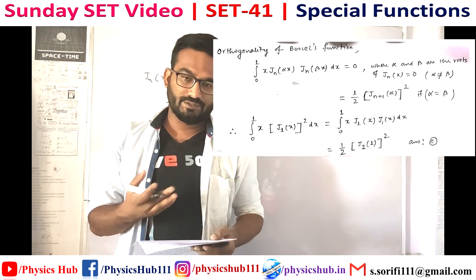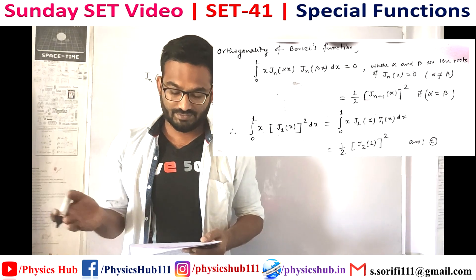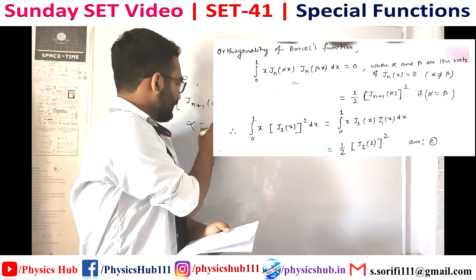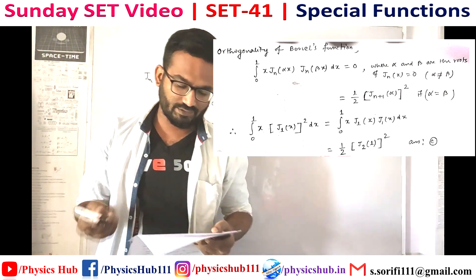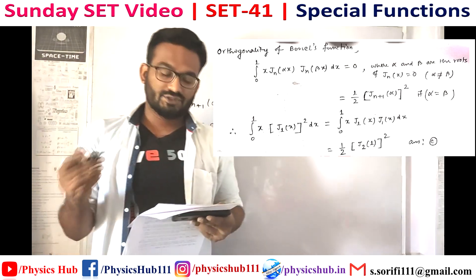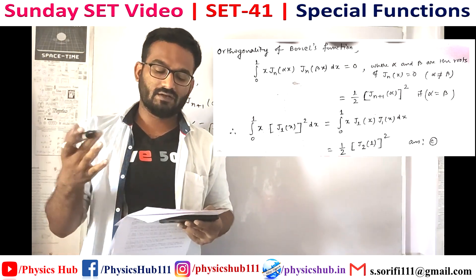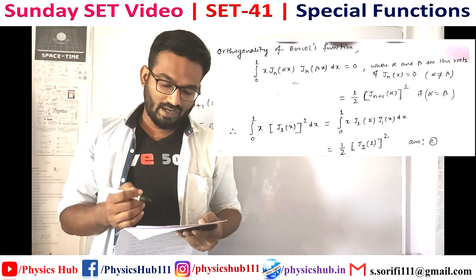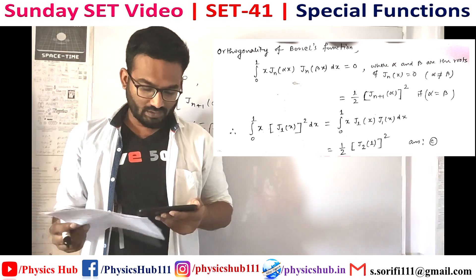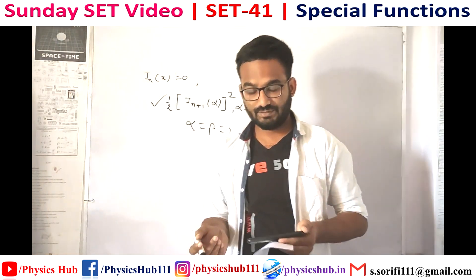This makes it very simple. We have the integral from 0 to 1 of x Jn(x)·Jn(x) dx, where α = β = 1. So according to the formula with α = β = 1, it produces ½ [J₂(1)]², since n + 1 = 2. So option C is the correct answer. Moving on to the next question.